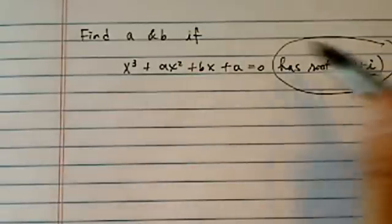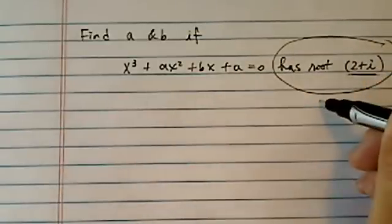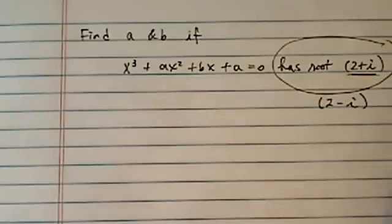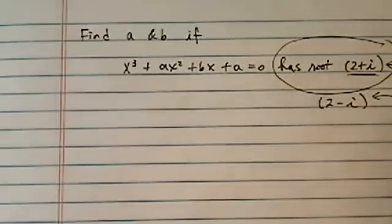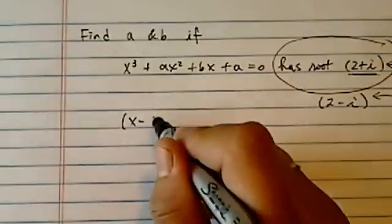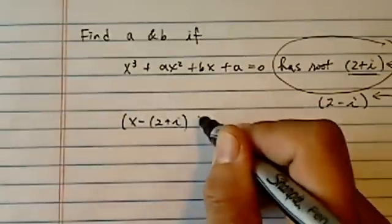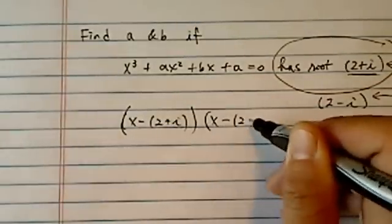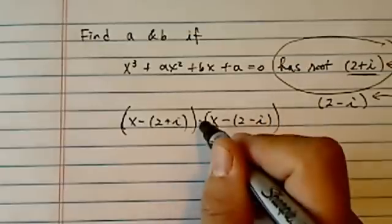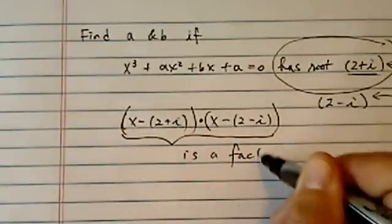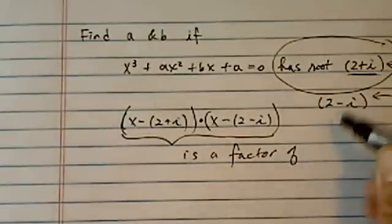When they tell you that this polynomial has a root, by definition, its conjugate is also a root. It's kind of like twins — evil twins. Maybe this is a pretty twin, and this is an evil twin. Nonetheless, they are twins. So right away, we know that (x minus 2 plus i) times (x minus 2 minus i), when you multiply this, is a factor of the polynomial.